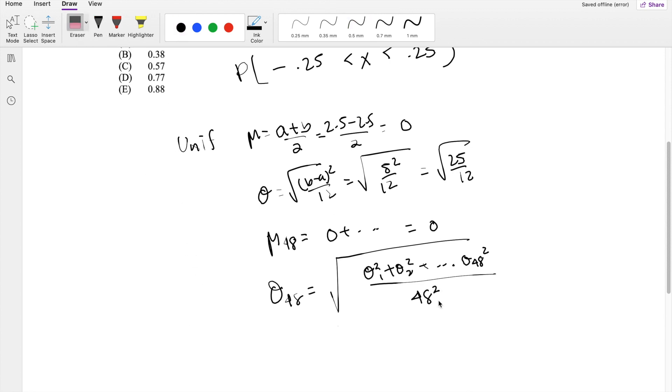But because it's in a square root, because it's in the variance world, we have to make sure we take the square root. But the good thing is, the numerator, when you simplify this a little bit, this becomes the variance times 48, divided by 48 squared.